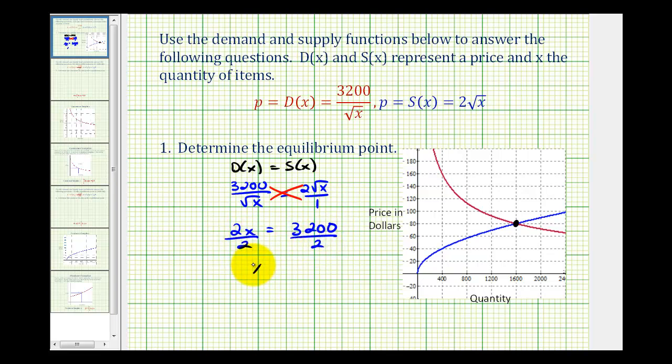So we have x equals 1,600, which is the x coordinate or the quantity of the equilibrium point. And now to determine the y coordinate or the price, we need to replace x with 1,600 in either the demand or supply function. Let's use the supply function. So S of 1,600 is going to be 2 times the square root of 1,600, which is 2 times 40, which is equal to 80, so that would be $80.